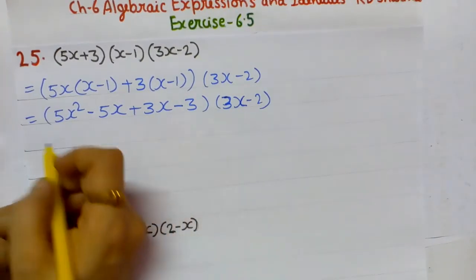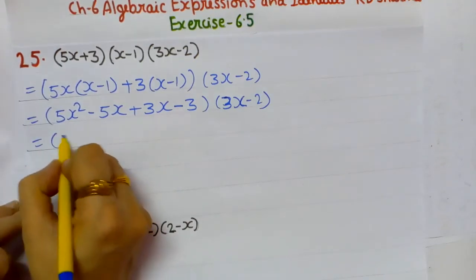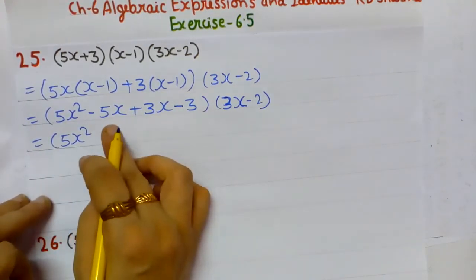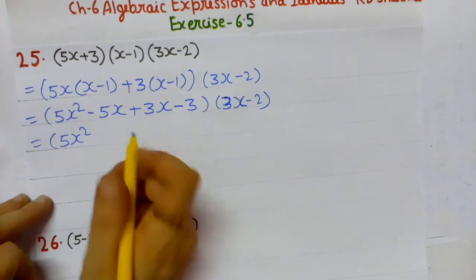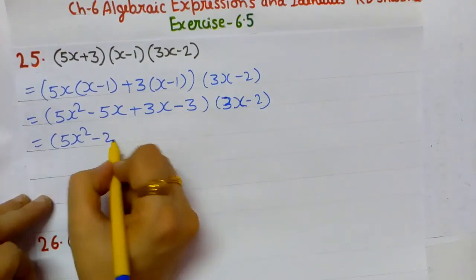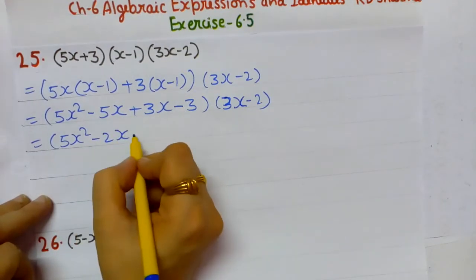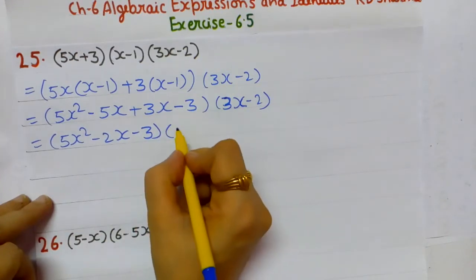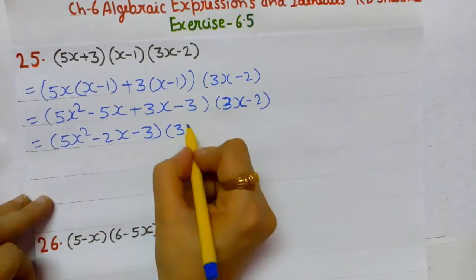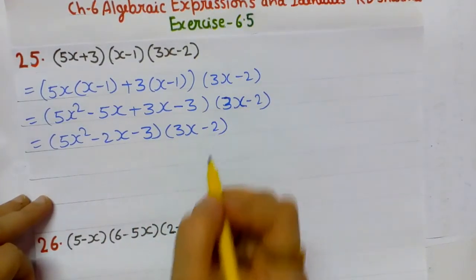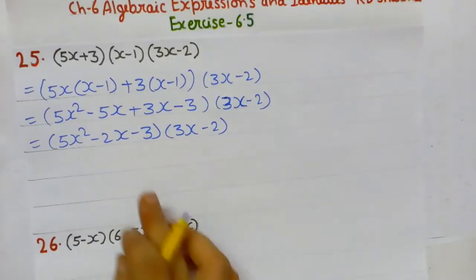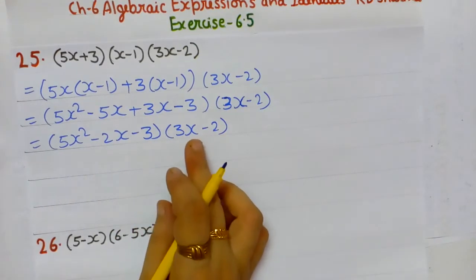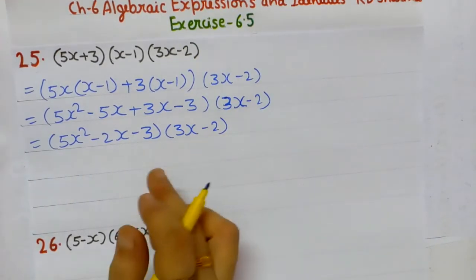Now with the 3rd bracket (3x - 2). Notice that -5x and +3x are like terms, so combining them: 5x² - 2x - 3, multiplied by the second bracket (3x - 2).